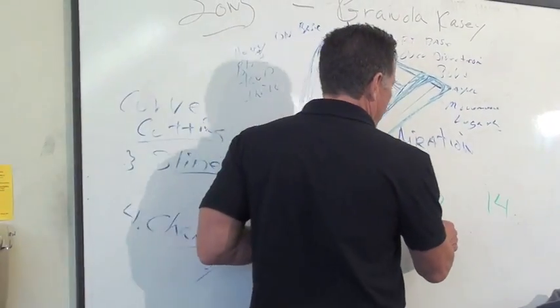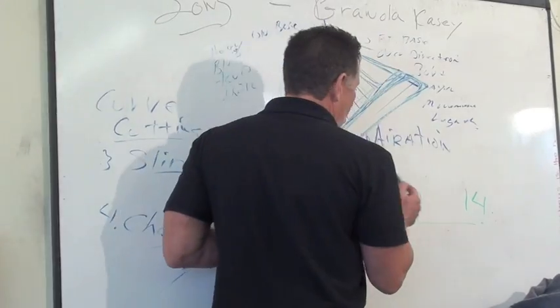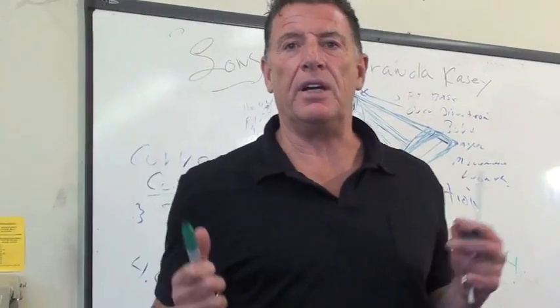pH scale. 1 through 14. Why did they number it 1 through 14? Somebody can answer this, they get something. But why 1 through 14?